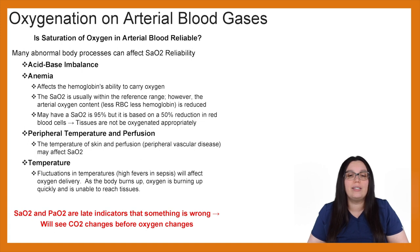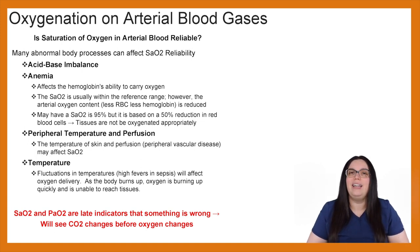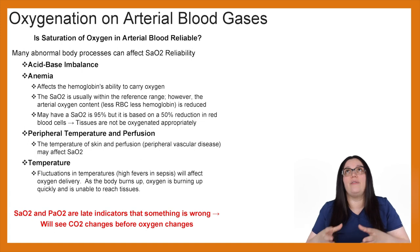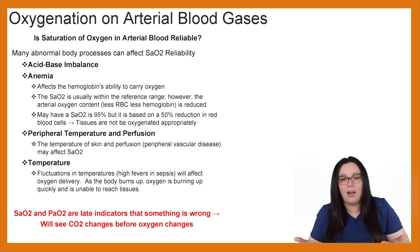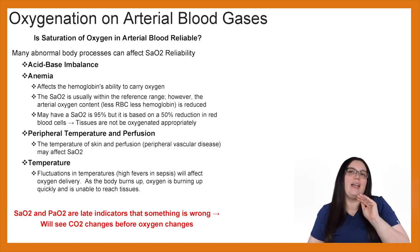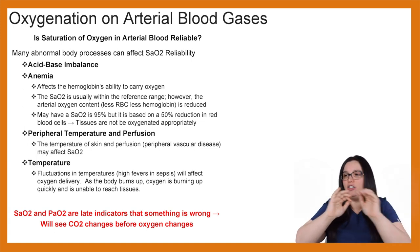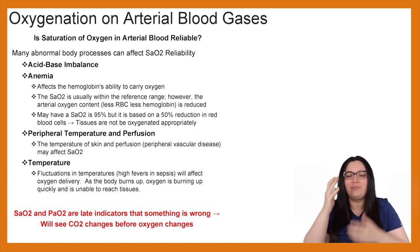Peripheral temperature and perfusion — particularly in patients with peripheral vascular disease — may affect the SAO2. Temperature fluctuations, such as high fevers in sepsis, affect the hemoglobin's ability to deliver oxygen. As the body is burning up, oxygen is being burned up very quickly and is unable to reach the tissues. The body is trying to deliver all of this oxygen to the tissues, but the extreme heat burns up that oxygen before it can even get to where it needs to be, ultimately affecting our SAO2.